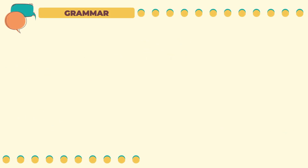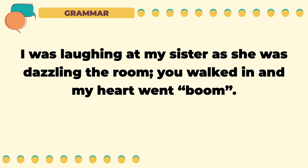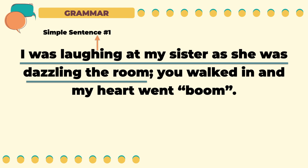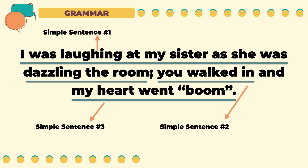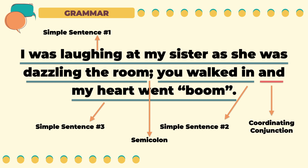Next example: 'I was laughing at my sister as she was dazzling the room; you walked in, and my heart went boom.' There are three simple sentences in this compound sentence. The first is 'I was laughing at my sister as she was dazzling the room.' The second is 'you walked in.' The third is 'my heart went boom.' The first and second simple sentences are connected by a semicolon, and the second and third are connected by the coordinating conjunction 'and.'